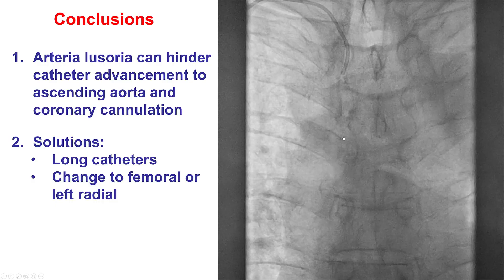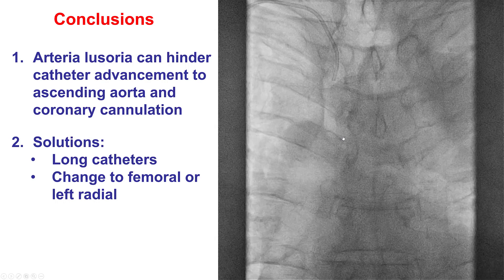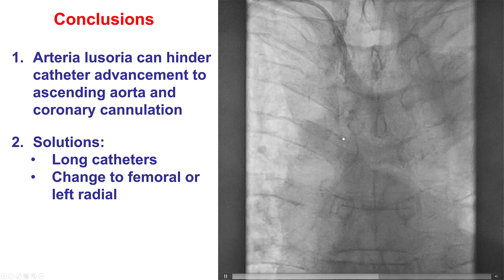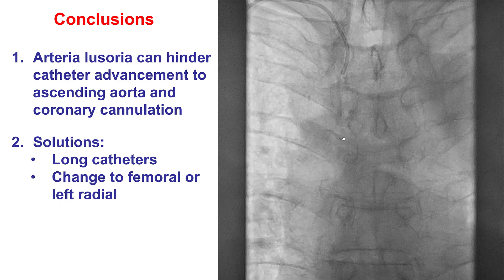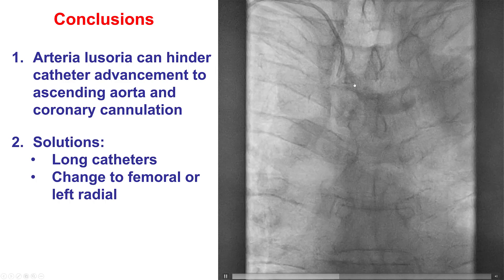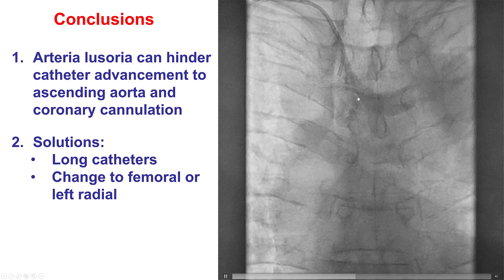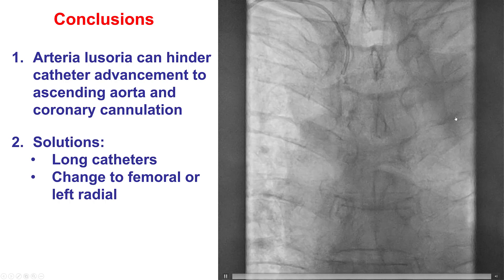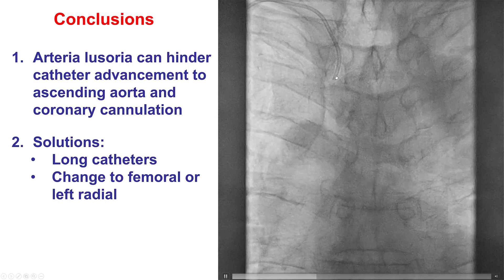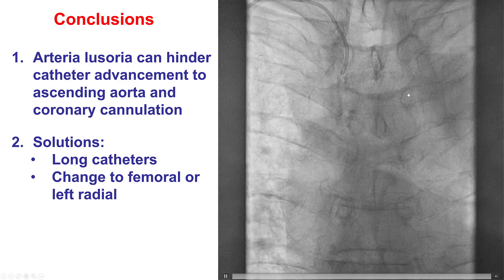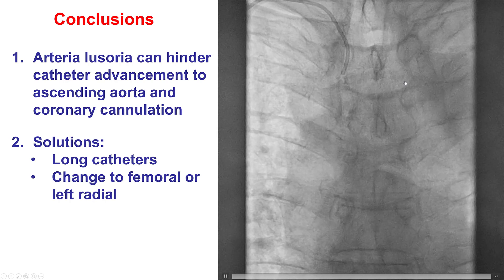Several lessons from this case. First, the presence of arteria lusoria is one of the potential causes of difficulty engaging the coronaries from right radial axis. Of note, this is not a problem from the left — it is specific to the right subclavian artery. One solution is going to the left radial or femoral. Another solution, however, is to use a long catheter and engage the coronary artery. One can actually even do PCI through an arteria lusoria.